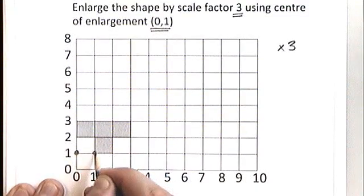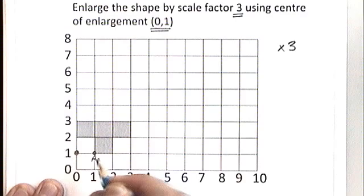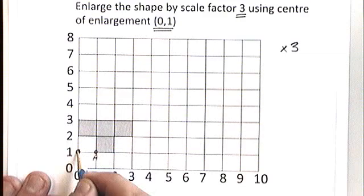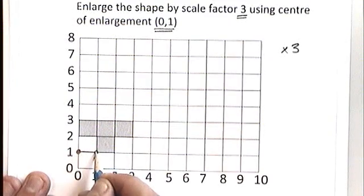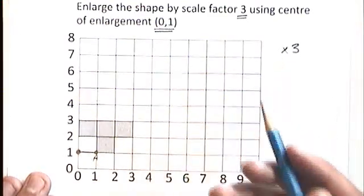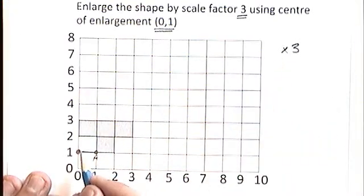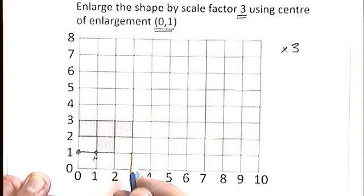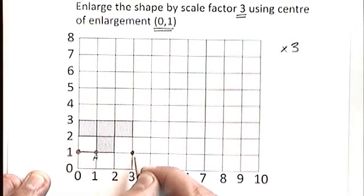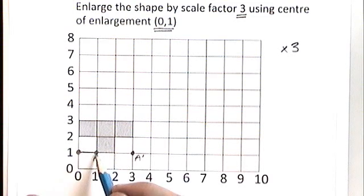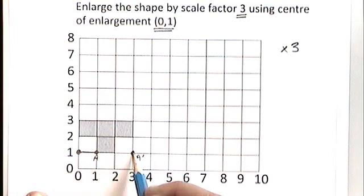So if I take a look here, this point here, I'm going to call it A. And what I'm going to do with A, is I'm going to say to myself, right, that's one square along from the center of enlargement. Times that by 3, I should get 3 squares from the center of enlargement. So I'm going to go in the same direction, 1, 2, 3 squares. That's where that point is going to move to. So A, this bottom left corner of the T shape, is going to be here when I enlarge the shape.